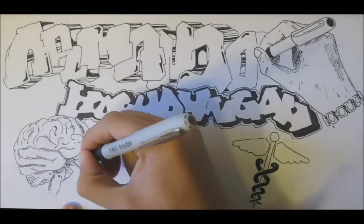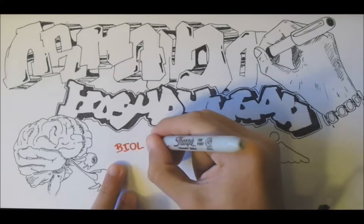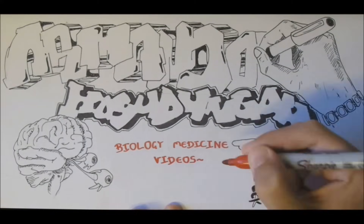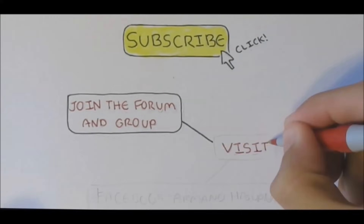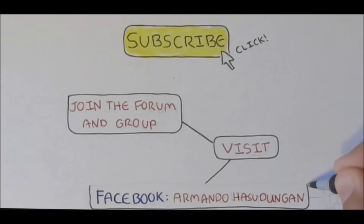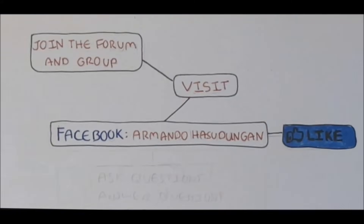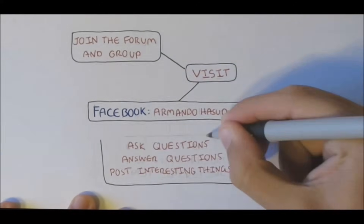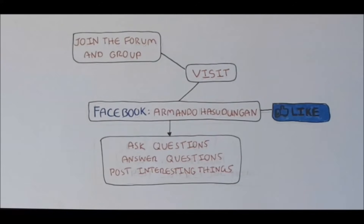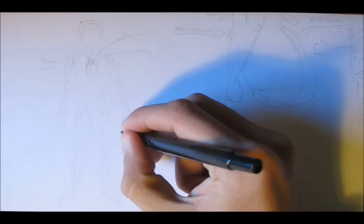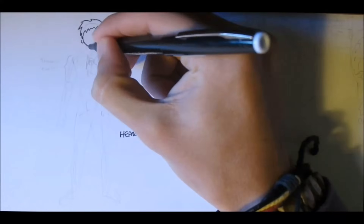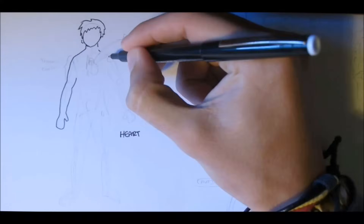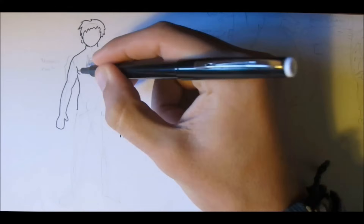Hello, you're watching Armando Hasurungan biology and medicine videos. Please make sure to subscribe, join the forum and group. For the latest videos, visit Facebook Armando Hasurungan, ask questions, answer questions, and post interesting things. Today's topic is on the basic anatomy of the heart and the veins, circulation of blood around the body, and a brief introduction to the physiology of the cardiovascular system.